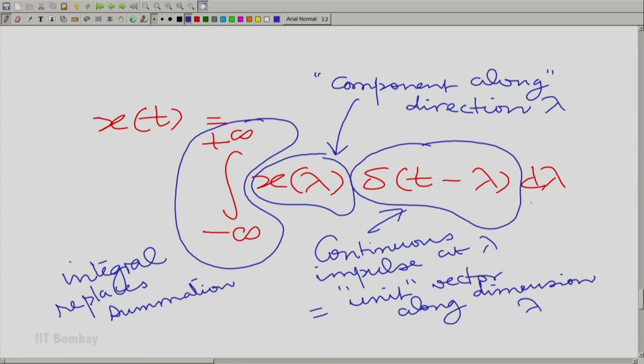What are we saying in this expression? We are saying that one can put together all these different continuum of dimensions indexed by lambda with the corresponding unit vectors, which are the unit impulses, but now in continuous time. It is easy to understand the connection between discrete variable signals and vectors first and then move to the continuous context. Once we understand the connection between discrete signals and vectors, moving to a continuous context is not difficult at all. Instead of summing over the different dimensions, you are now integrating over the different dimensions.